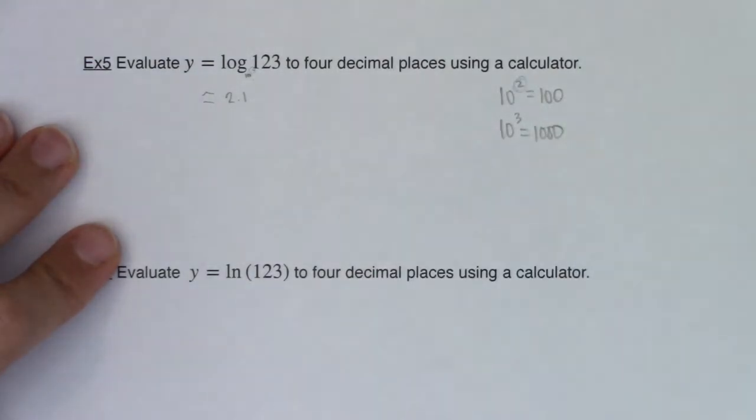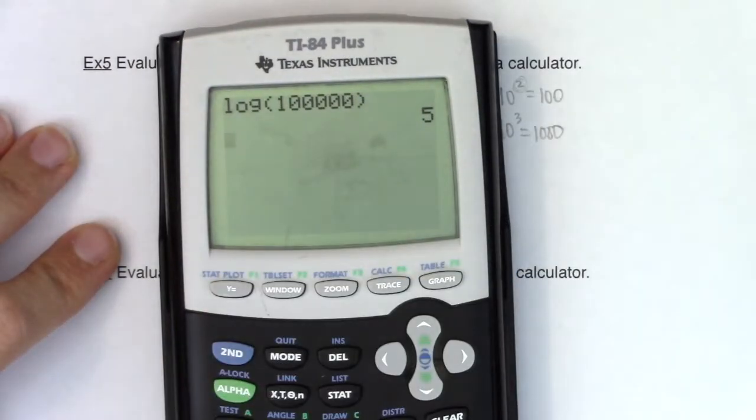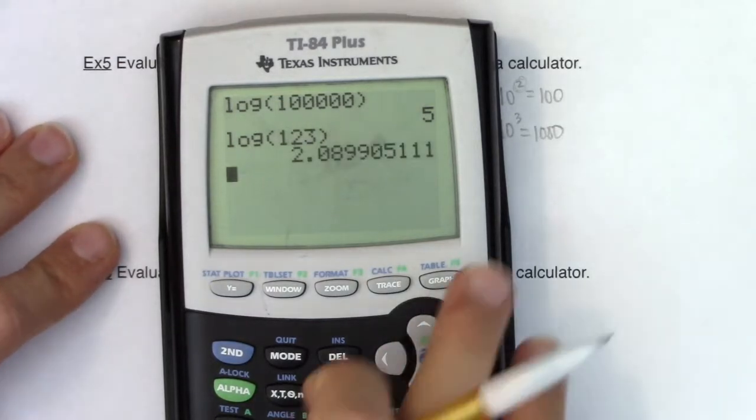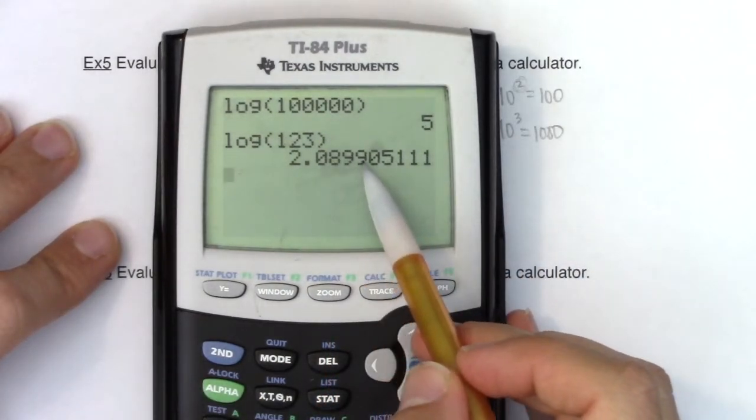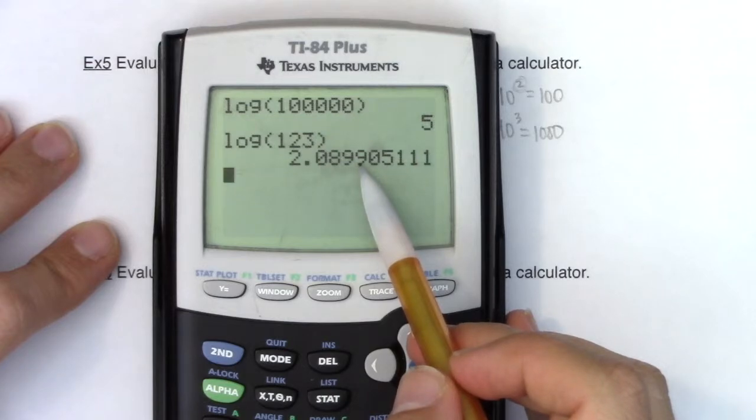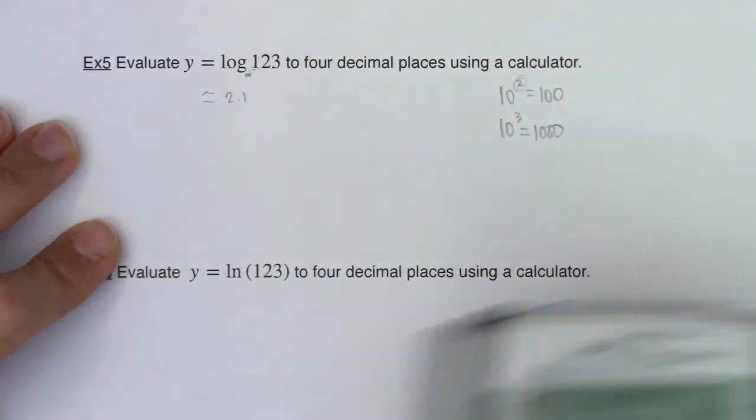So let's crunch this on our calculators. All I'm going to do is hit my log button, not my ln key, my log key, and let's type in 123, my argument, and let's go to four decimal places. So I'm going to go one, two, three, four, and if I look to the right of that fourth digit, it's a zero, which is telling me you don't need to round up, just keep it as a nine. So it looks like the answer to this is 2.0899.